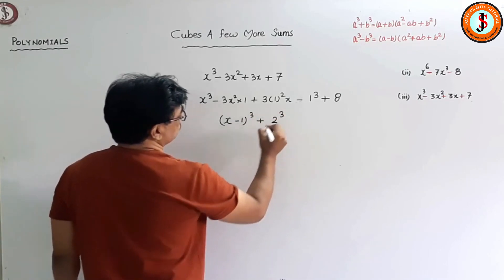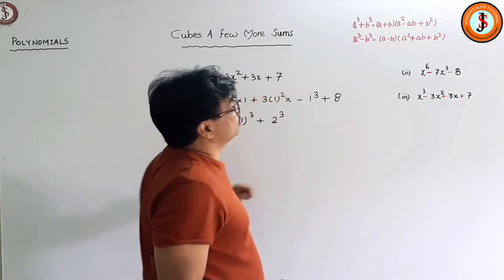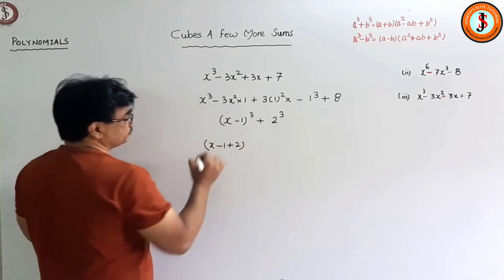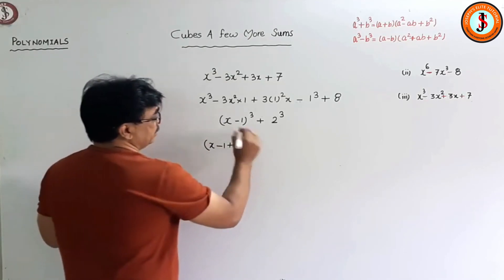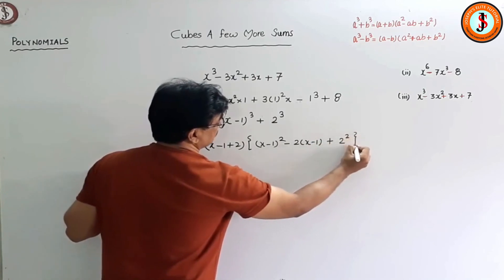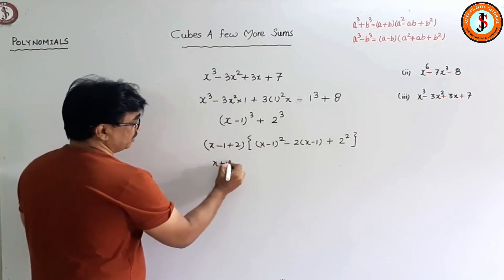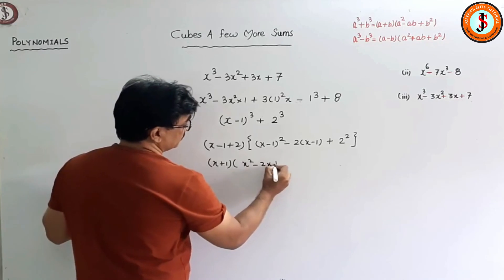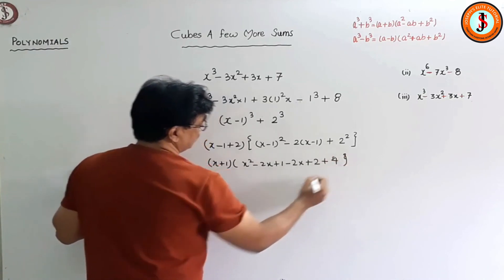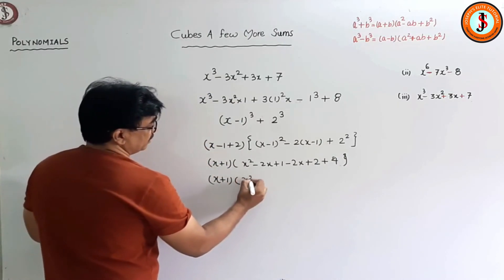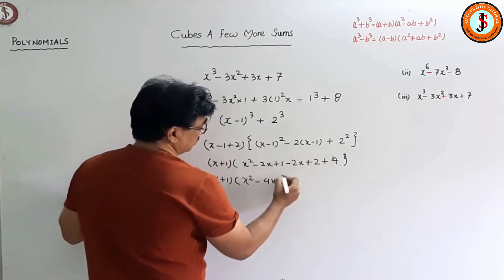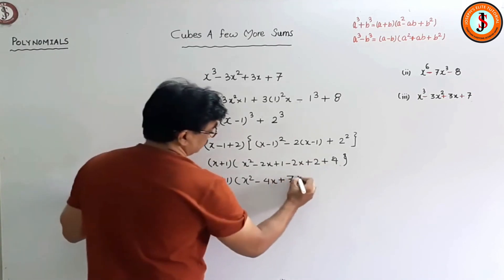So this becomes (x - 1)³ + 2³. Now again we apply the a³ + b³ formula: (a + b)(a² - ab + b²). So this gives (x - 1 + 2) multiplied by ((x-1)² - (x-1)(2) + 4), which simplifies to (x + 1)(x² - 2x + 1 - 2x + 2 + 4), giving (x + 1)(x² - 4x + 7). That's the complete factorization.